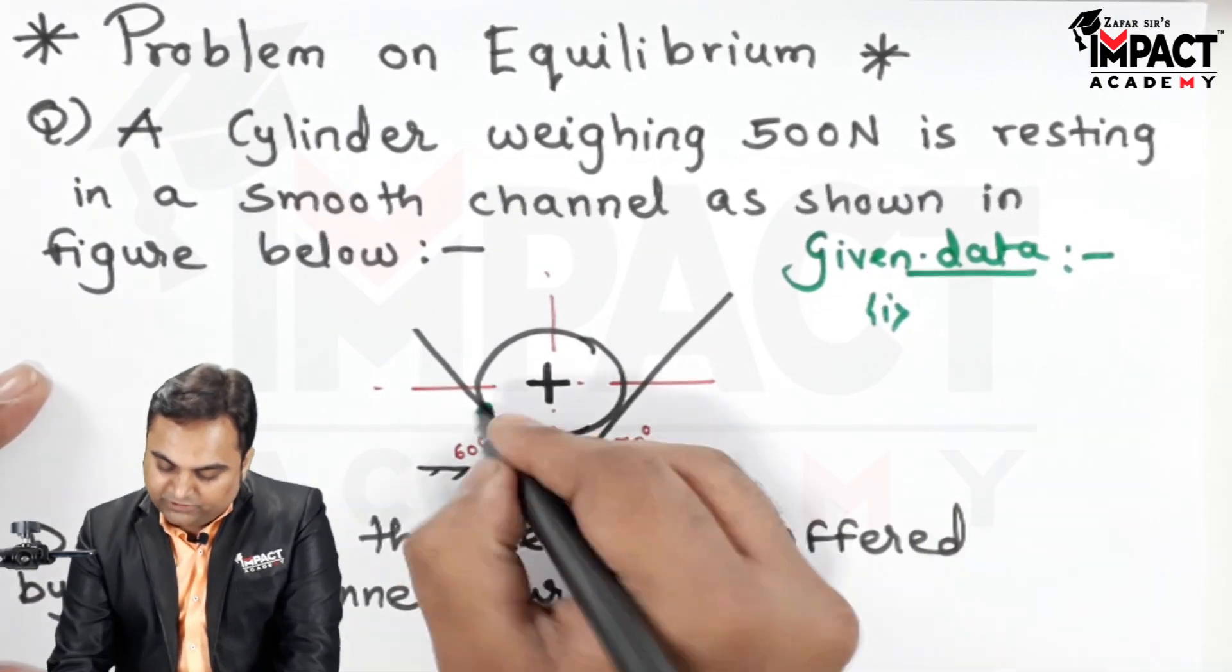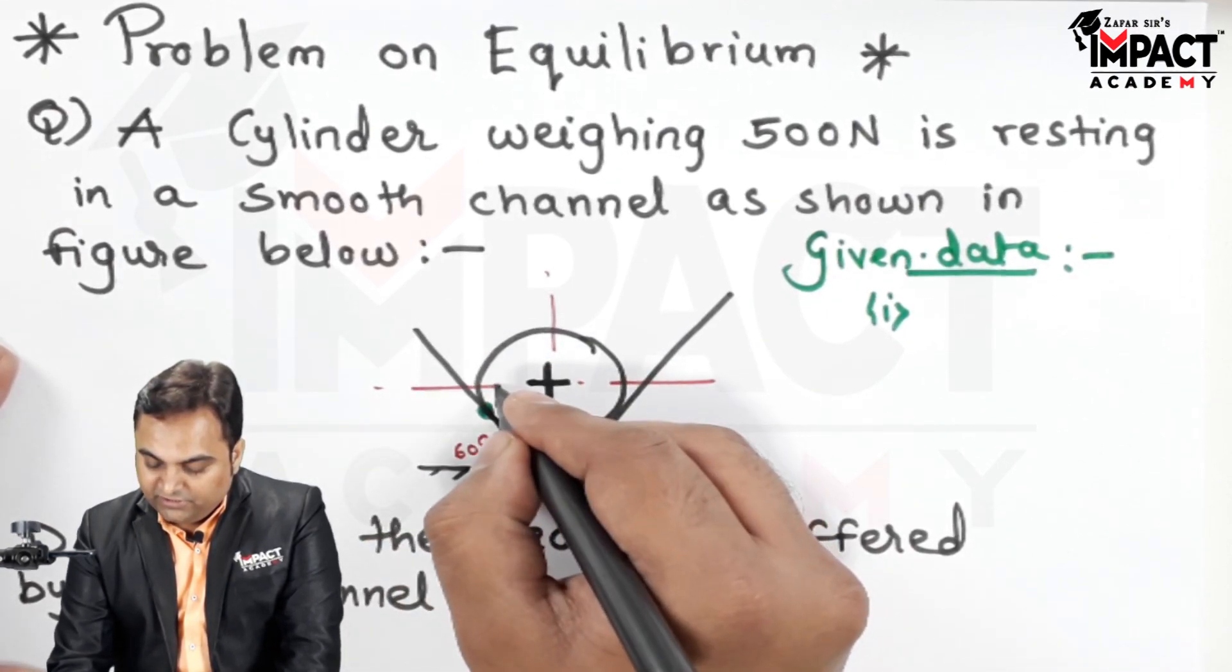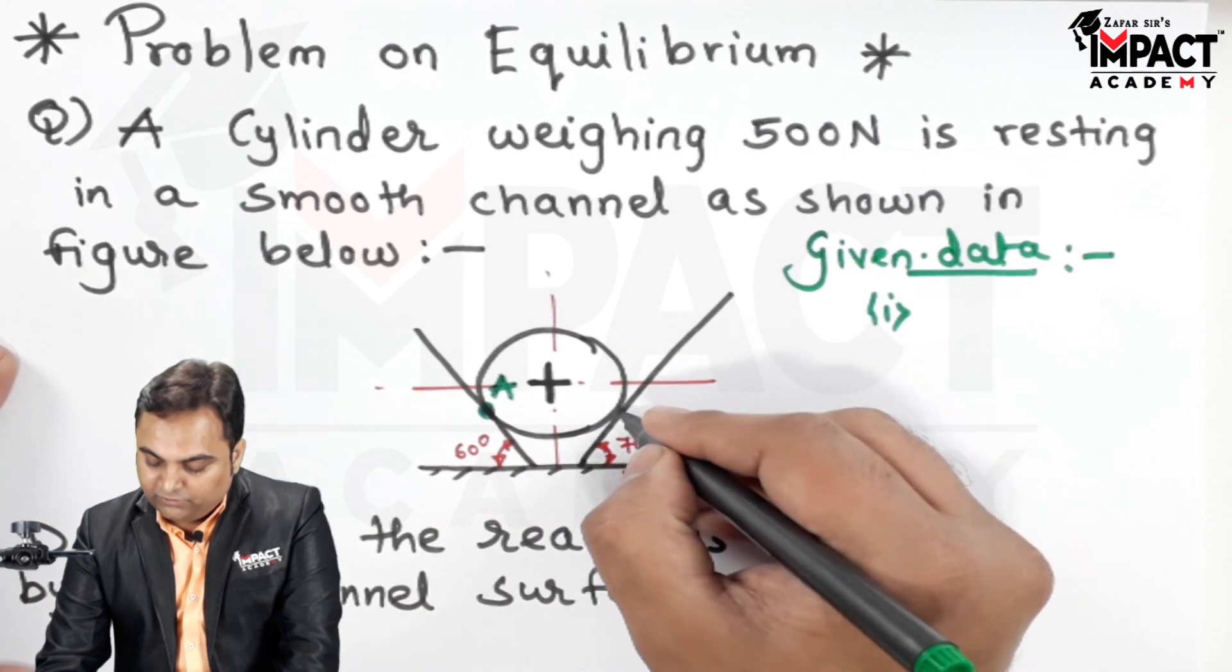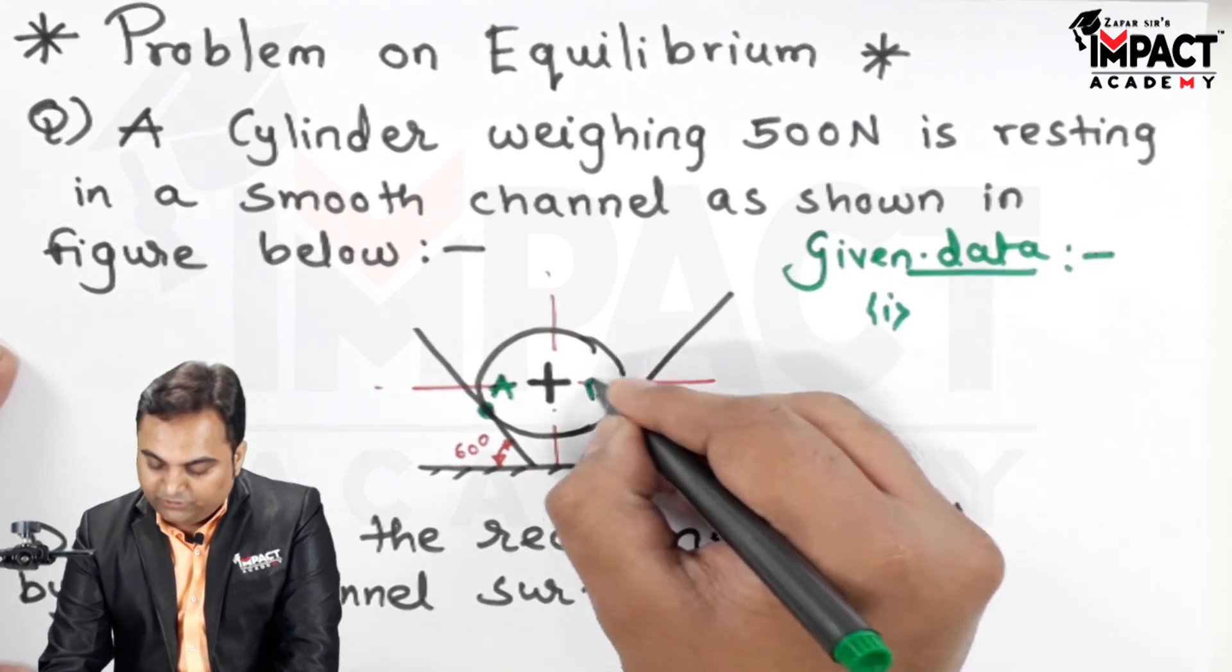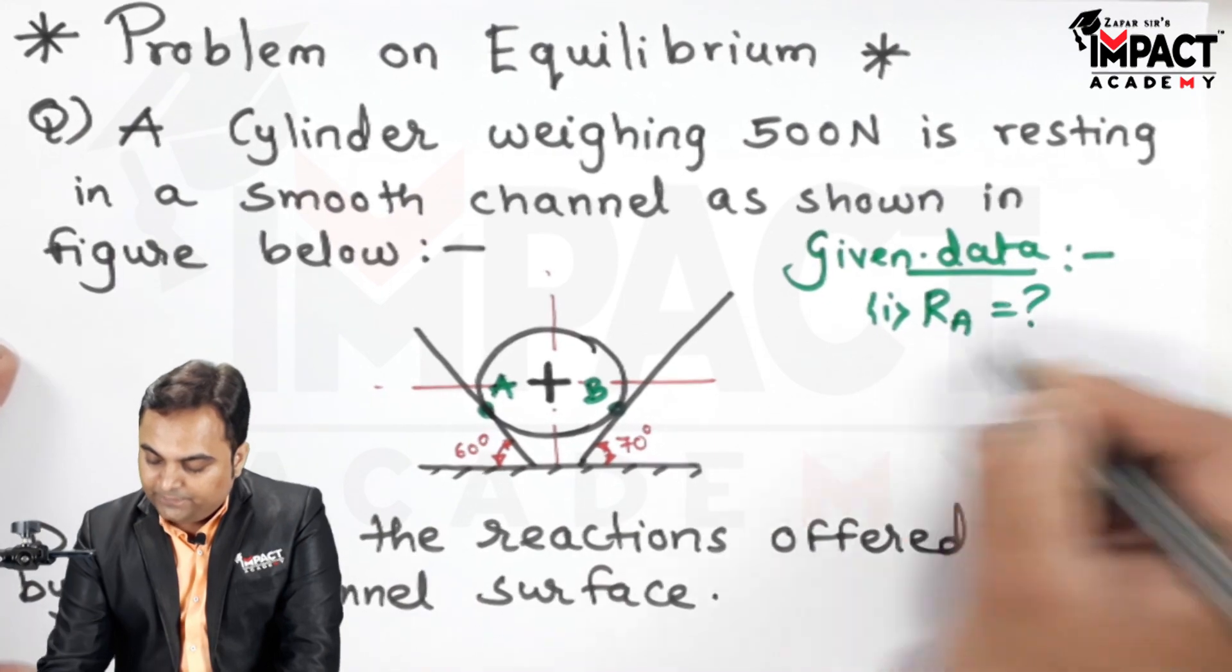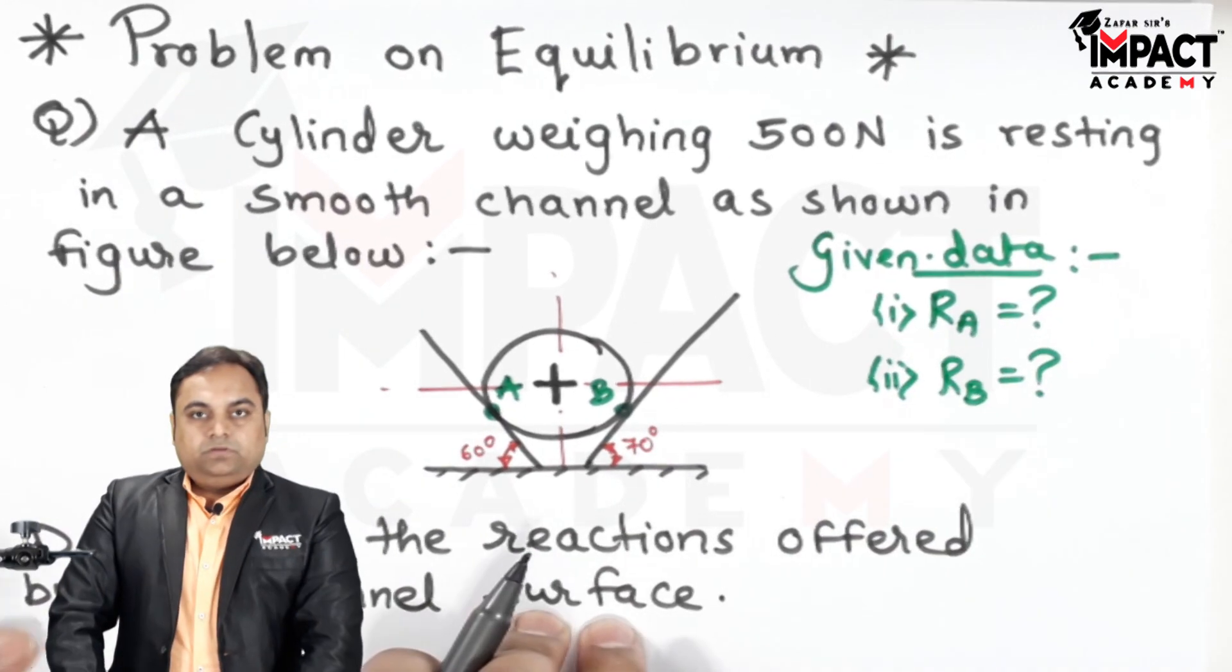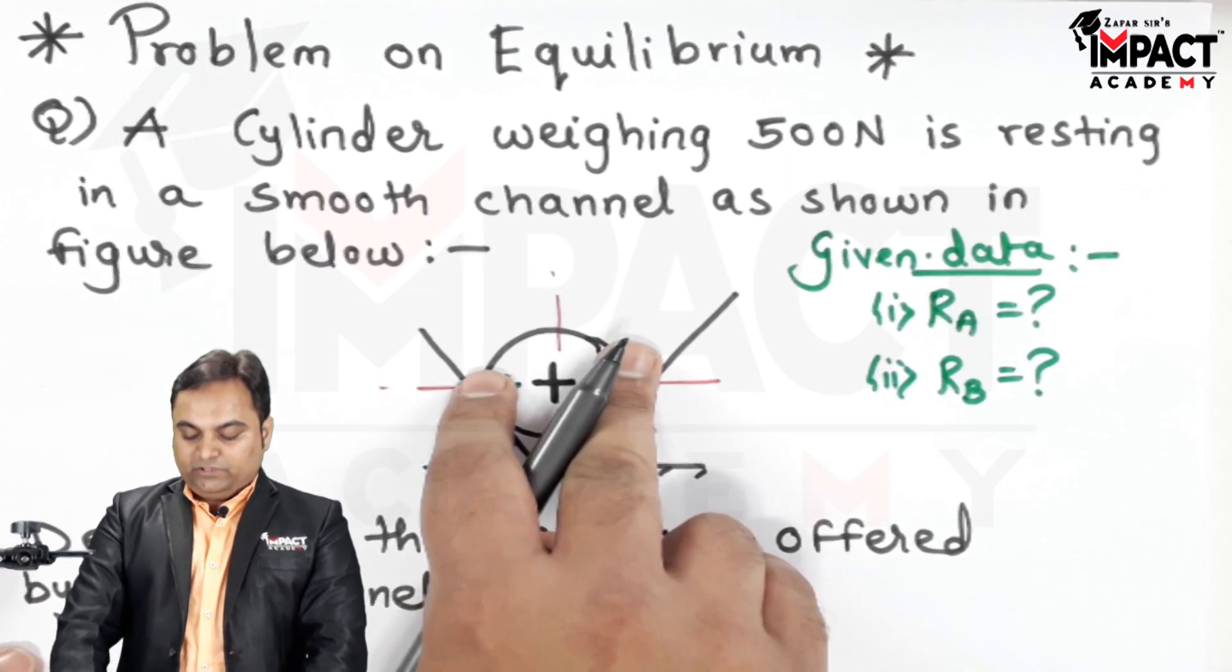I'll call this support, this point wherein the cylinder is in contact with the surface at 60 degree, that is point A, and where it is in contact with 70 degree plane, that is point B. So we have to find out the reactions offered at point A and point B.